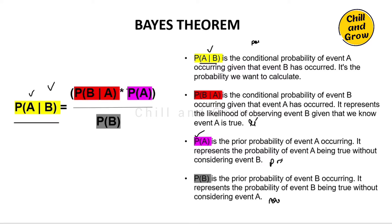To summarize how Bayes theorem works: you start with a prior belief about event A. When new evidence B comes in, you combine the prior with the likelihood P of B given A. Updating the prior with evidence gives you the posterior. This is the Bayes theorem. Now let's look at an example.